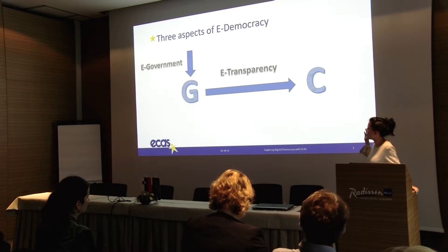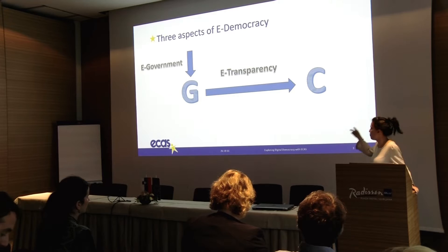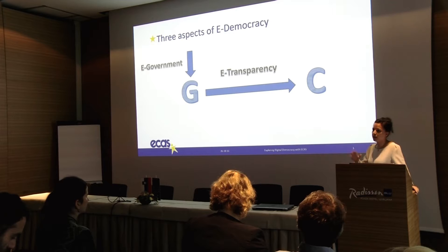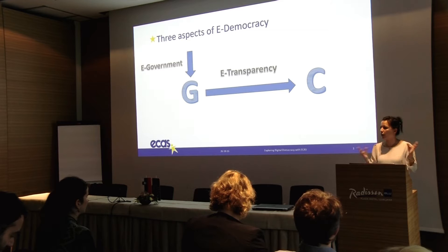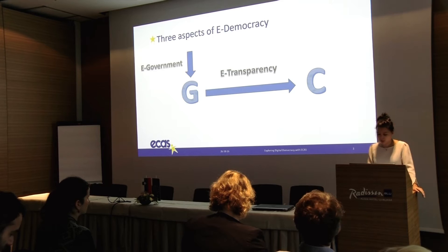The second aspect is e-transparency — how the government uses technology and ICT tools to open up more to the citizens by publishing in a more transparent way everything it's working on. For example, politicians can publish if they're working on pieces of legislation. It opens up more to the citizens, but it goes in this one direction.